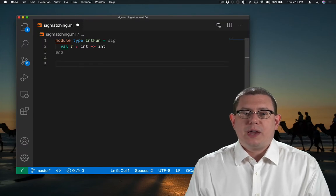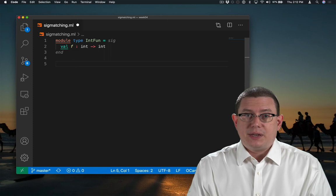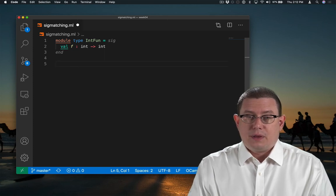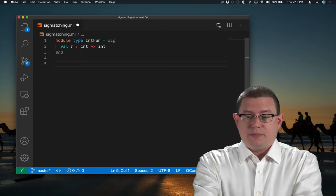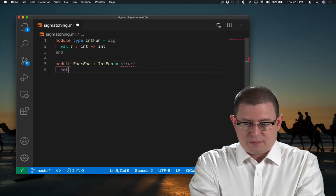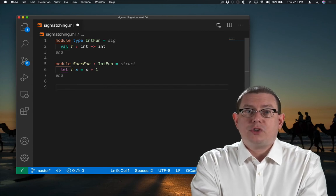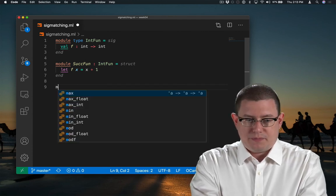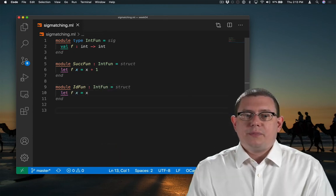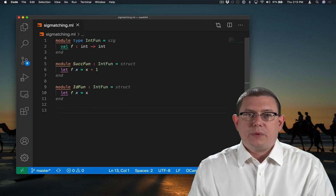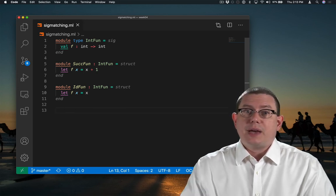Suppose we had a module type that specified there had to be a function f whose type was int arrow int. Then we could implement that with a module which really does have a function of that type. We could also implement it with a function with a more general type.